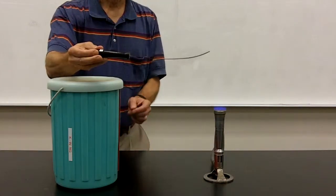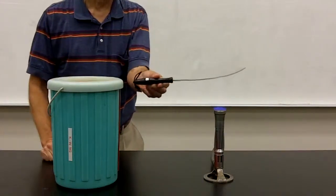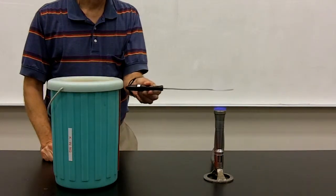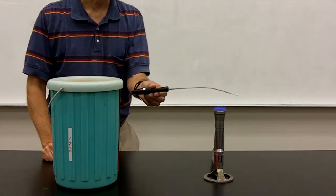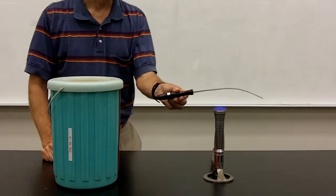Now if I take this same strip and put it over the flame, it'll start heating up and we'll see that it curves in the downward direction.